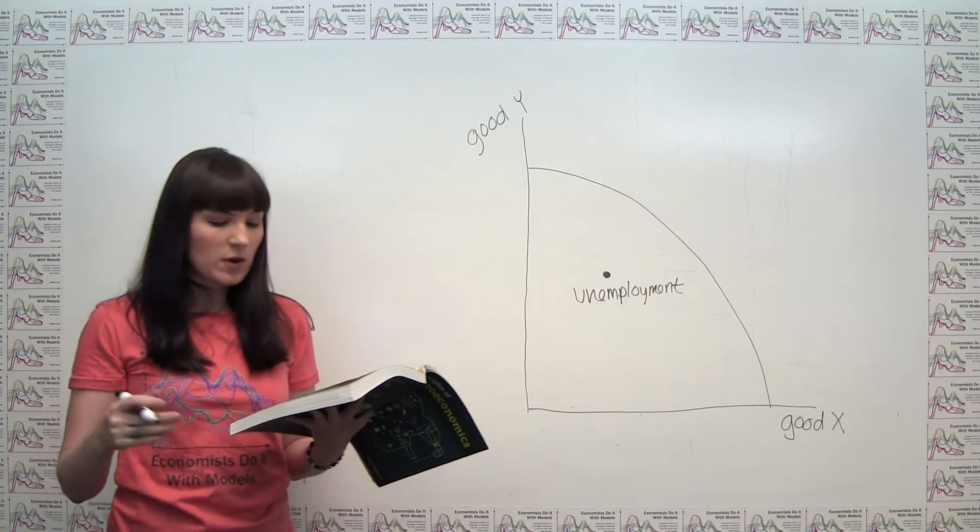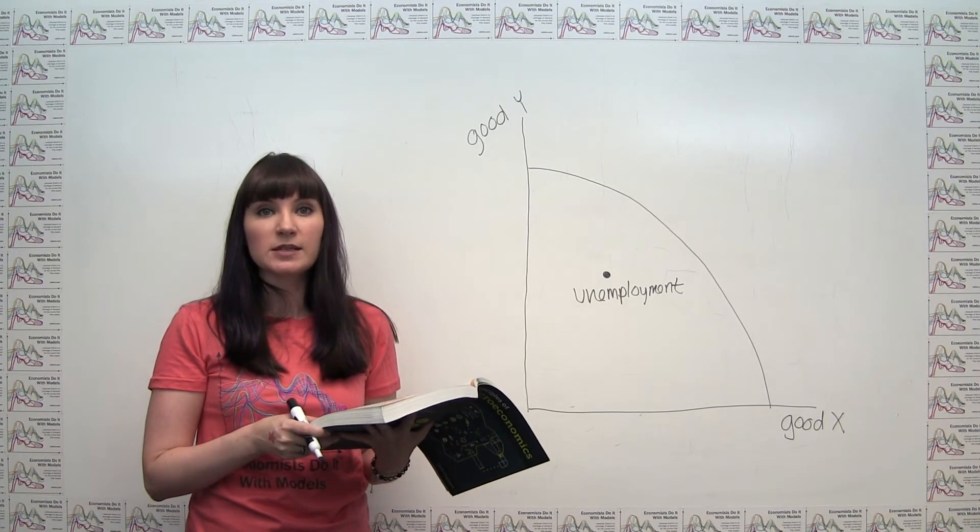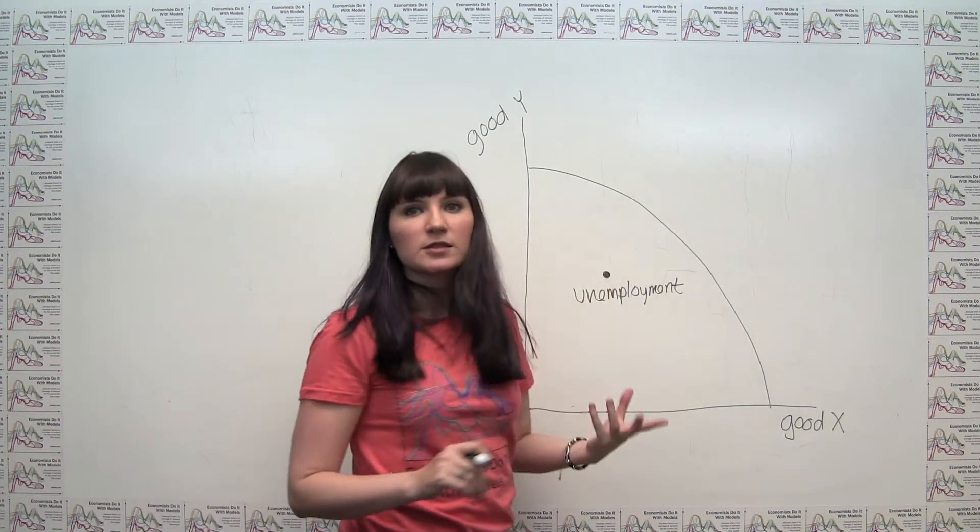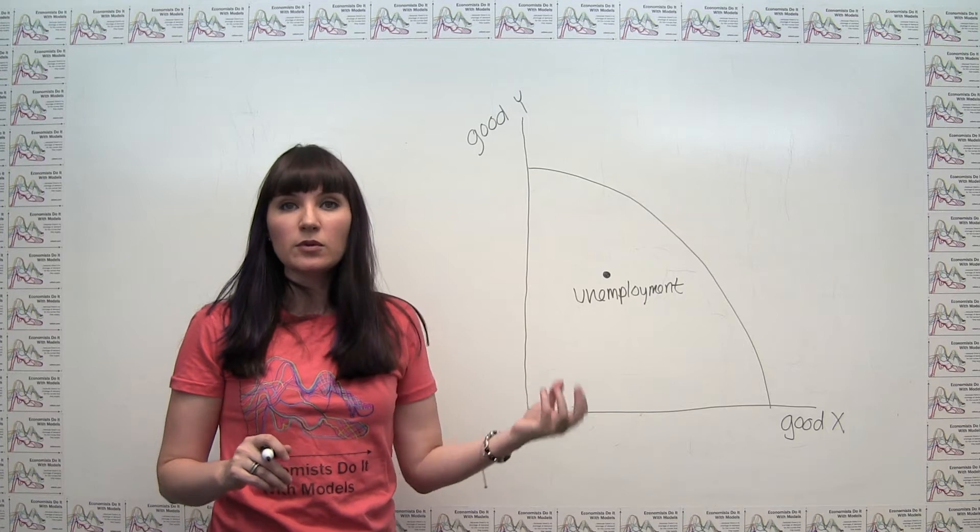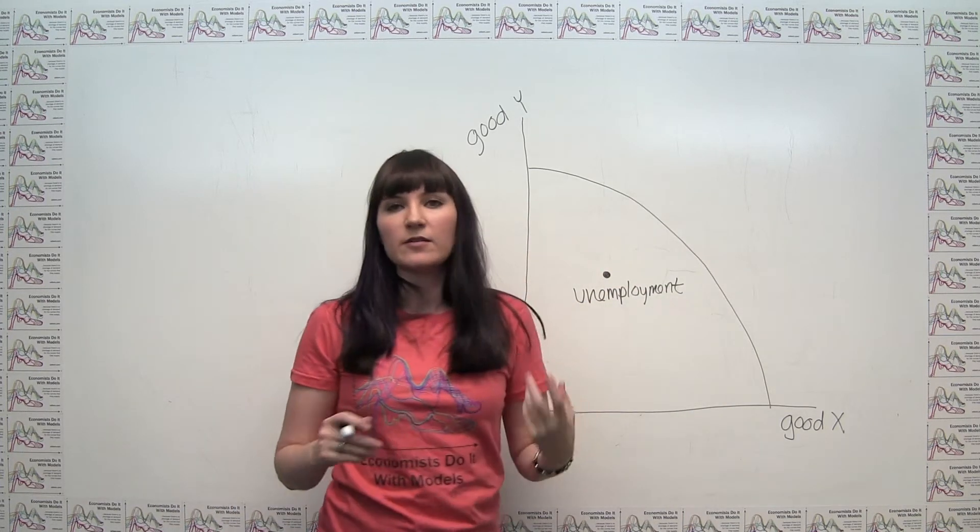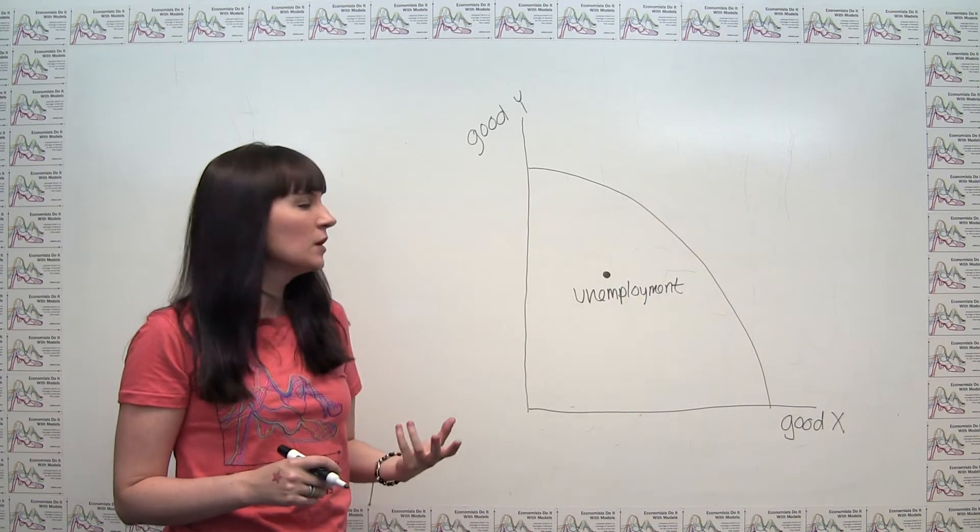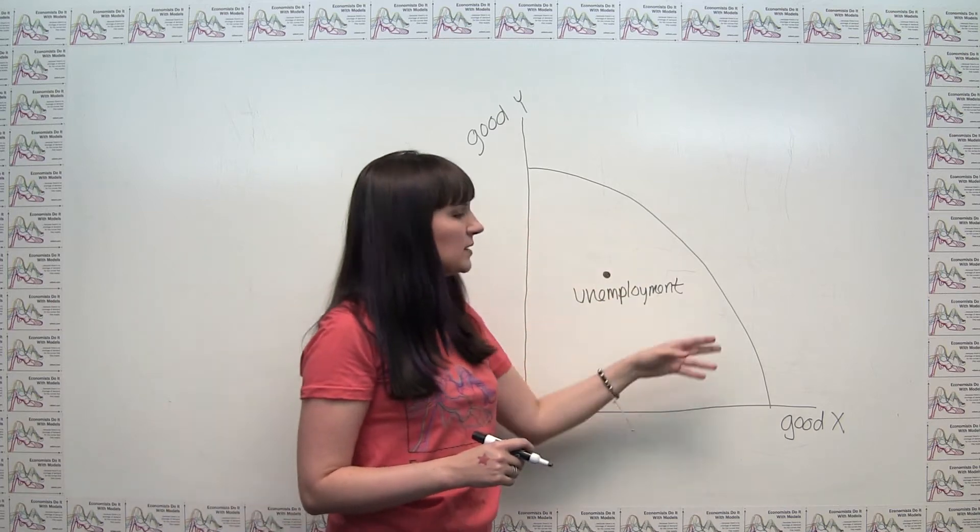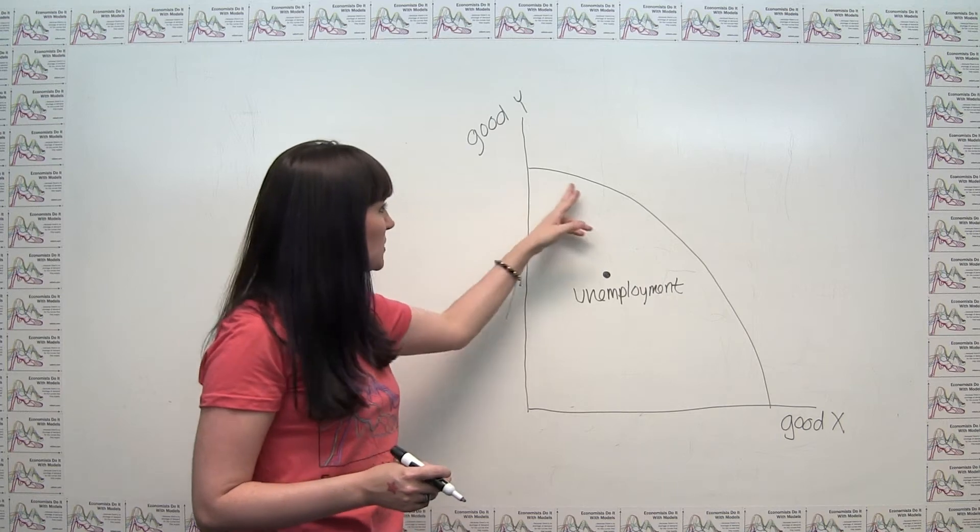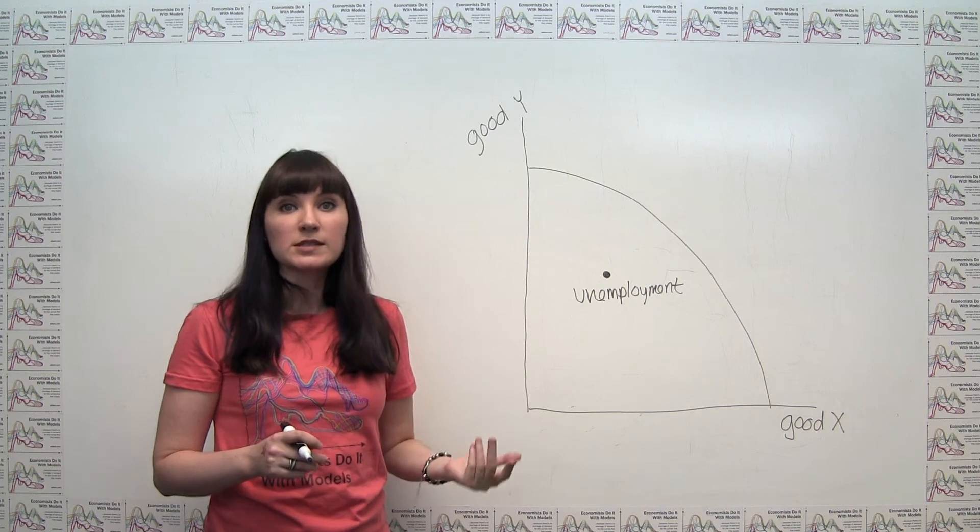The next part of the question asks, where would you plot full employment on a production possibilities frontier? So we can think about that. We said that unemployment, if there are productive resources that are not being employed, then we're not on the frontier or the set of maximum output that we can achieve. So in one sense, if we have full employment, that should imply that we're actually on our production possibilities frontier.